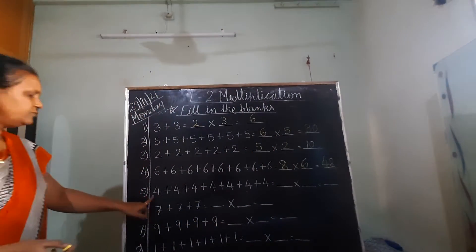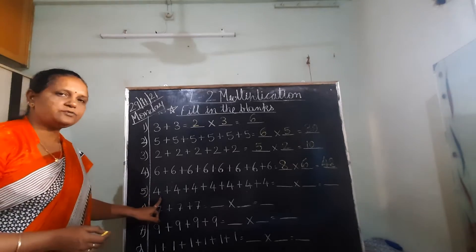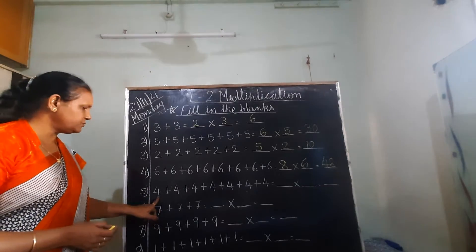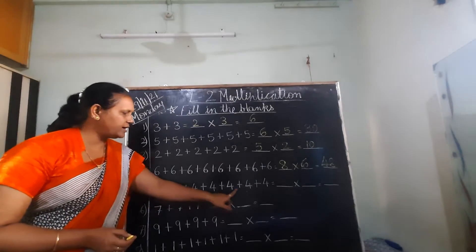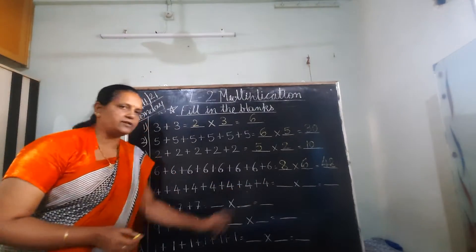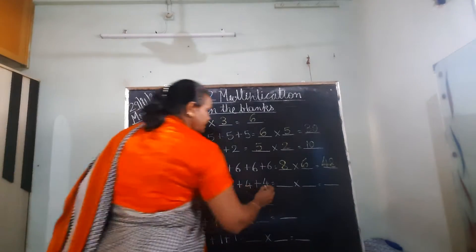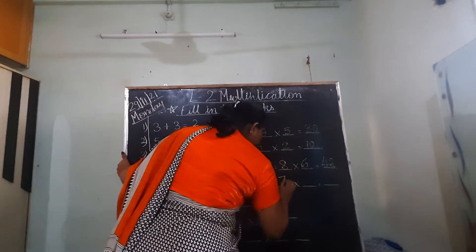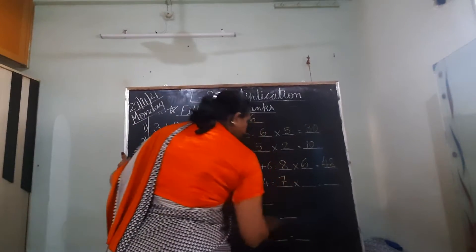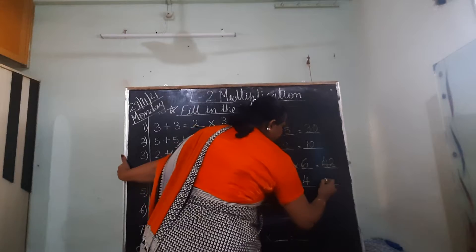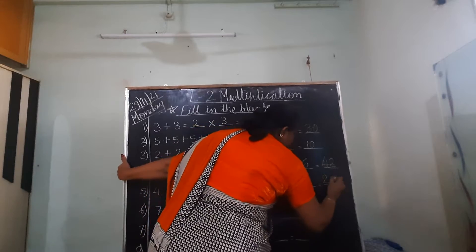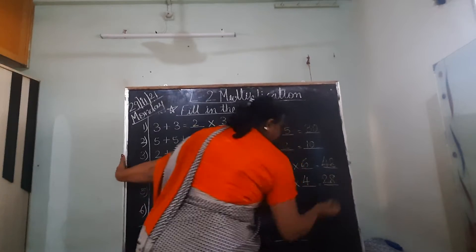4 is repeated for how many times? 1, 2, 3, 4, 5, 6, 7. So write down 7 here. And 4 — 7 4's are 28.